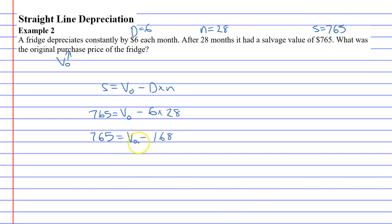Now, to find V0, we need to get rid of the minus 168 part. So we're going to do the opposite of that, plus 168 to cancel it, and plus 168 on the other side. Which comes to 933, which is your V0. So V0, the original purchase price of the fridge was $933.